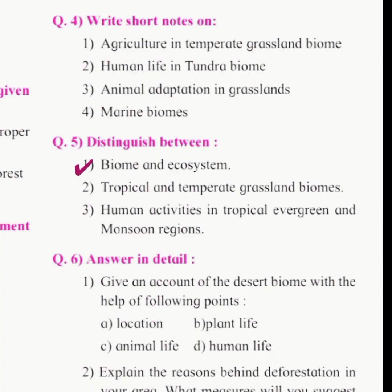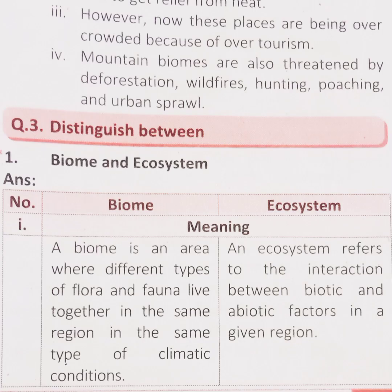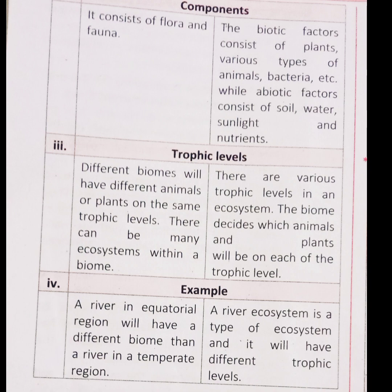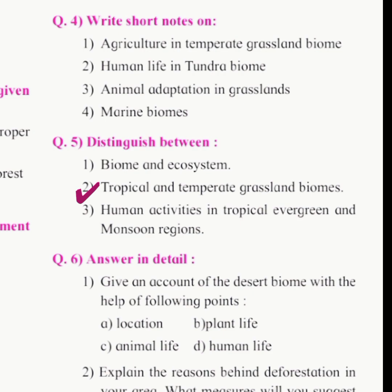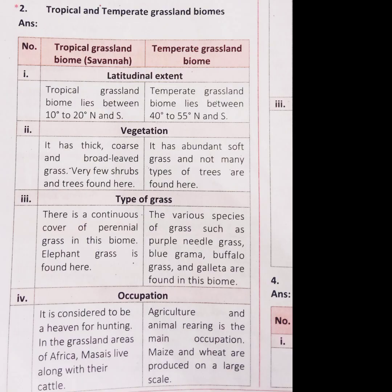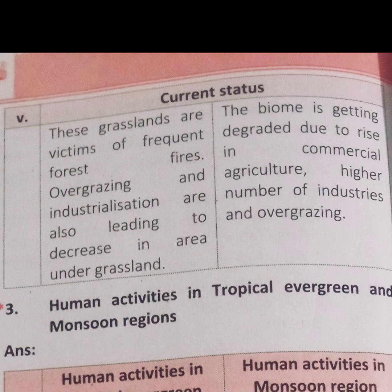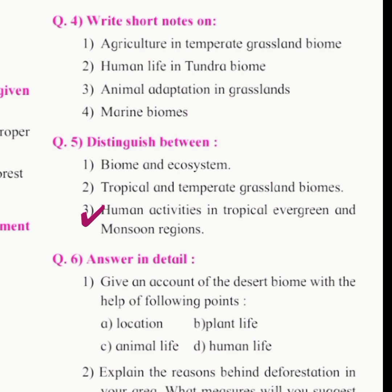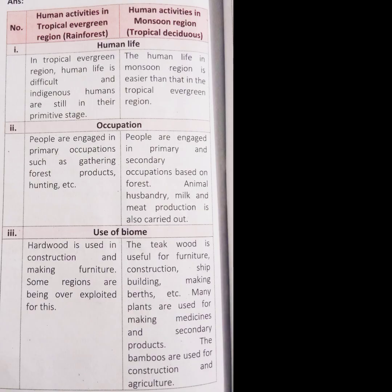Question 5: distinguish between the following. First: biome and ecosystem. Second: tropical and temperate grassland biomes. Third: human activities in tropical evergreen and monsoon regions.